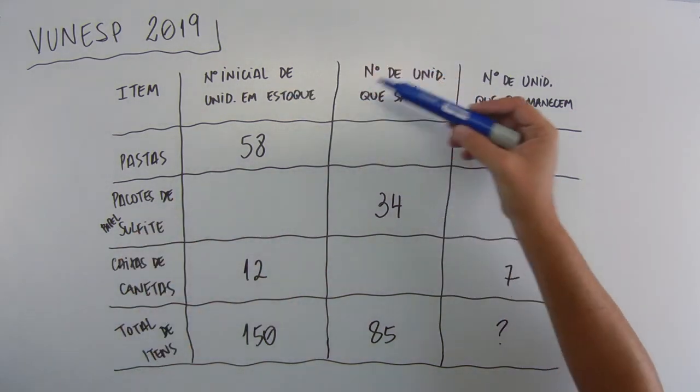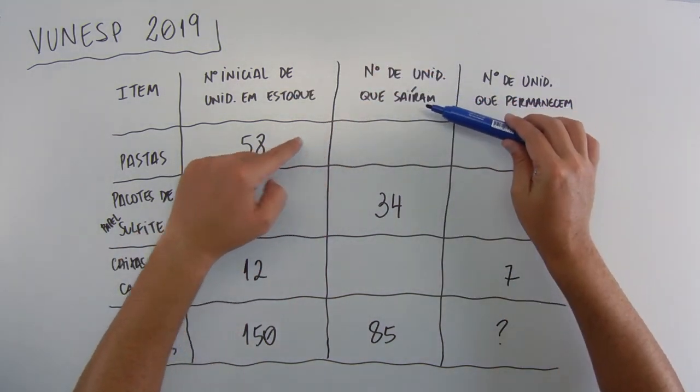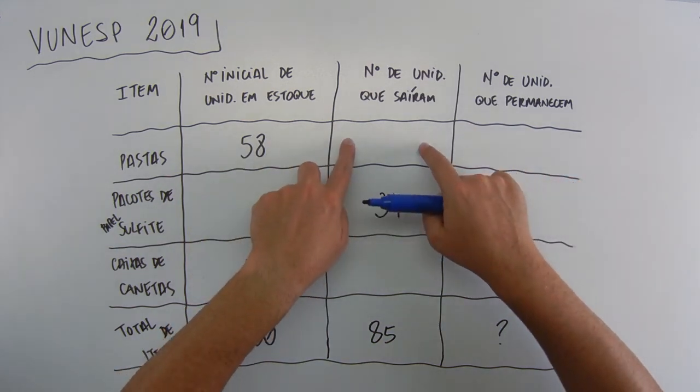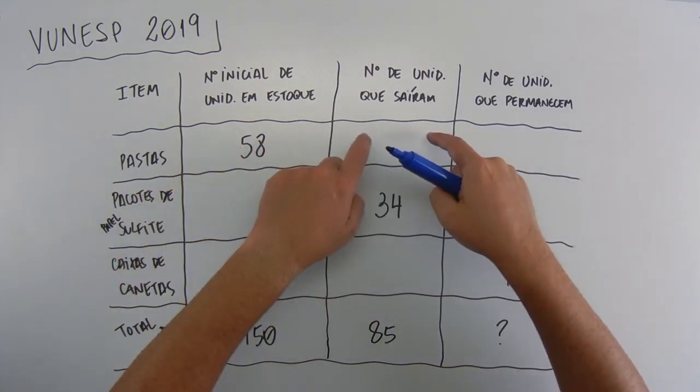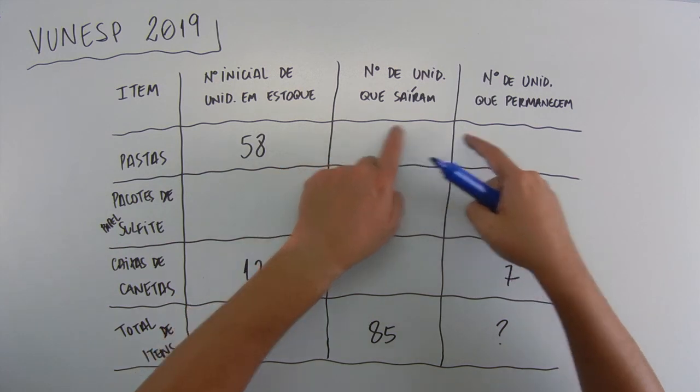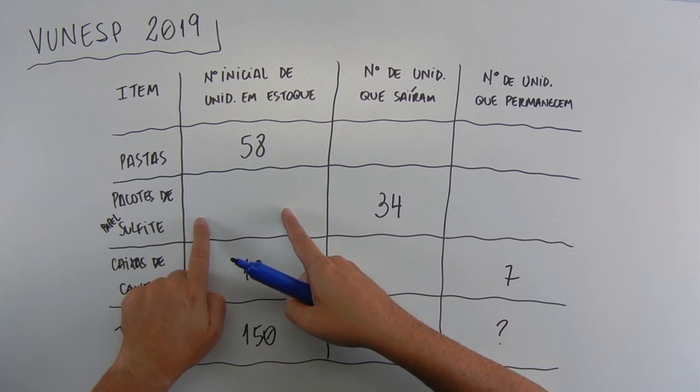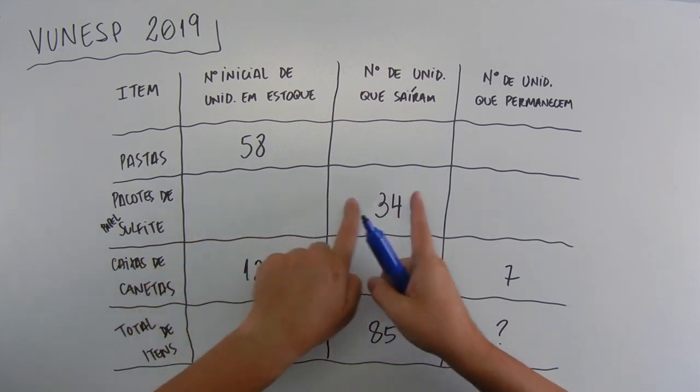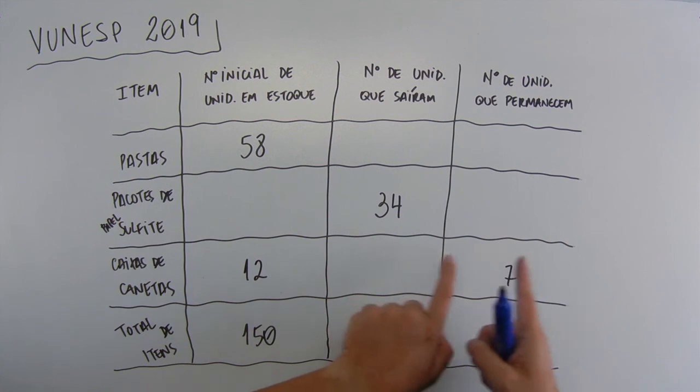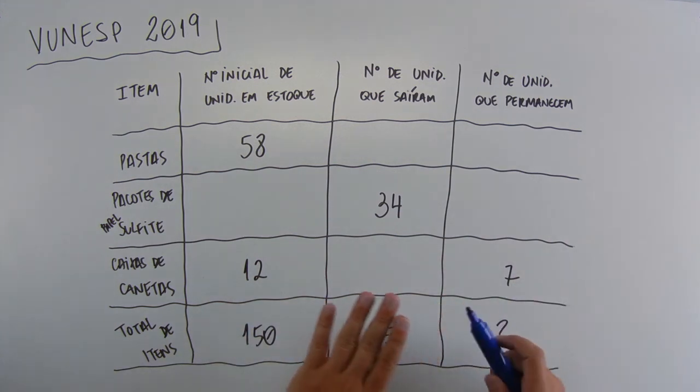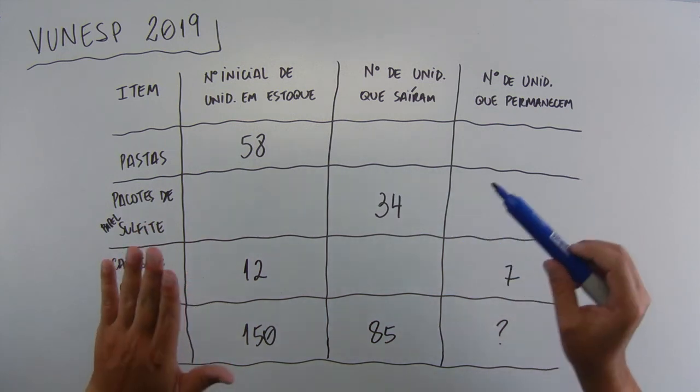Let's see how to solve this. If we have the initial stock number and here the number that left, then there's pasta. Stock 58 left, meaning this 58 was subtracted this number and this remained. But we don't have either of these two, so we can't know. Pacote de sulfite, same thing. There's a total, took out, remained. Total, took out and remained. Total, took out and remained. Let's see now what is the problem's question. We understood the table.